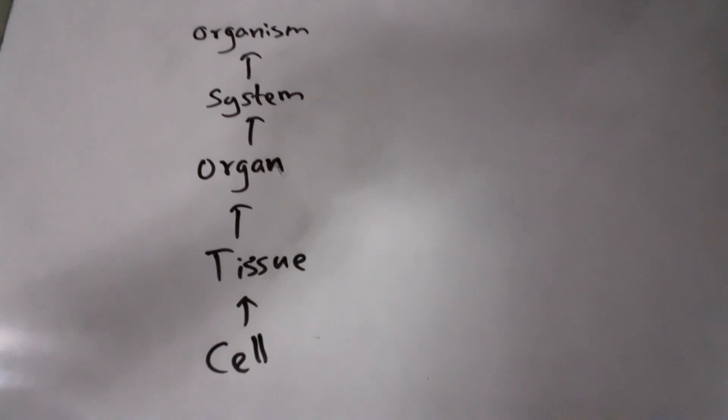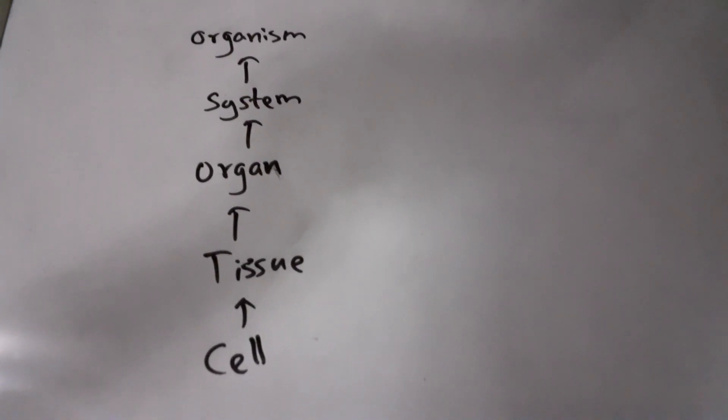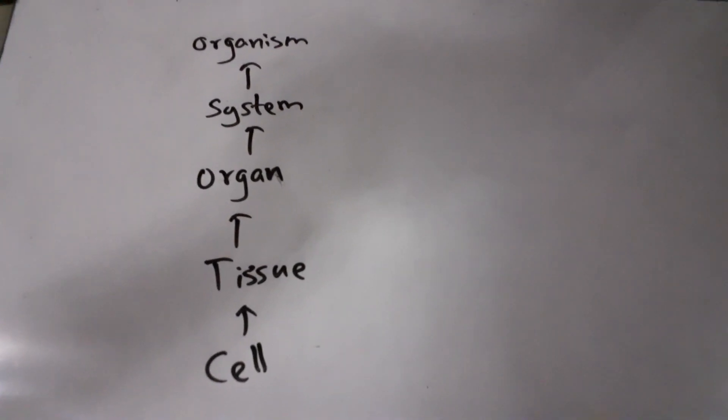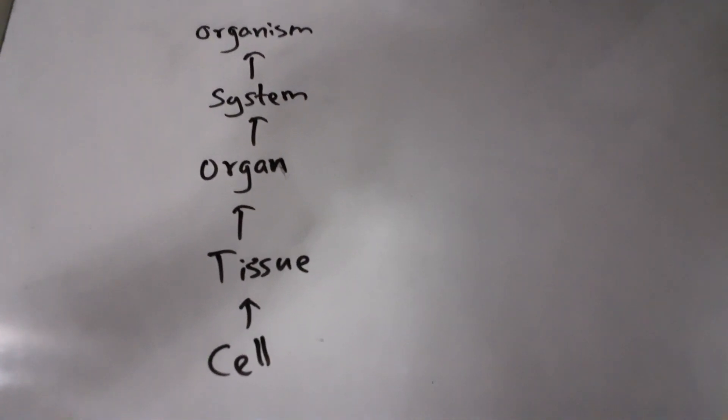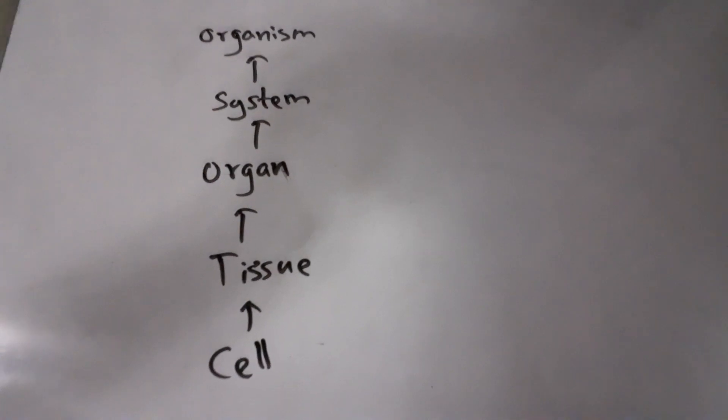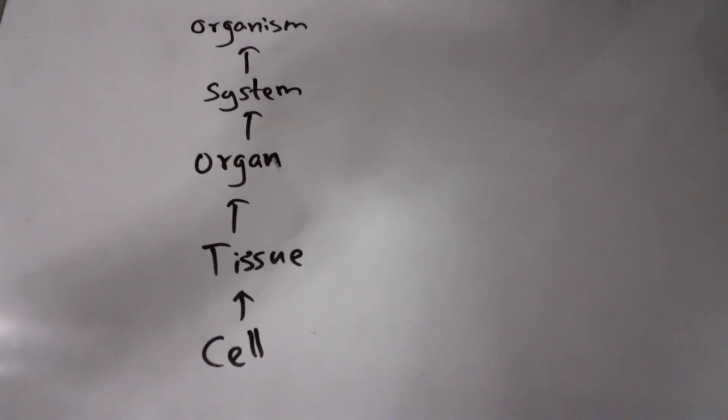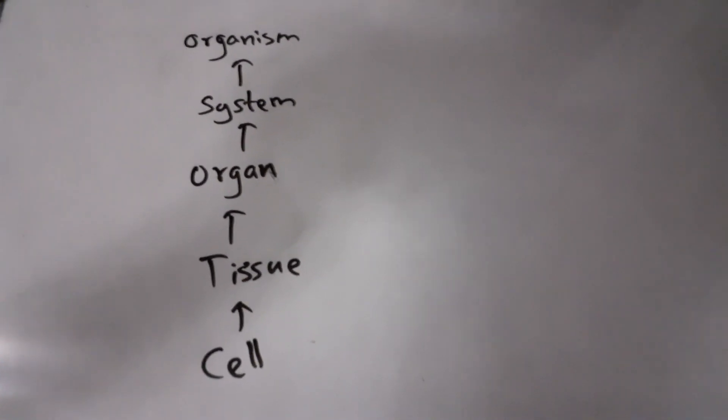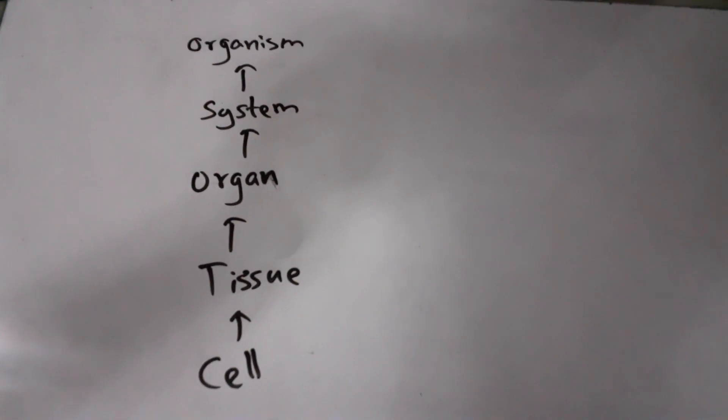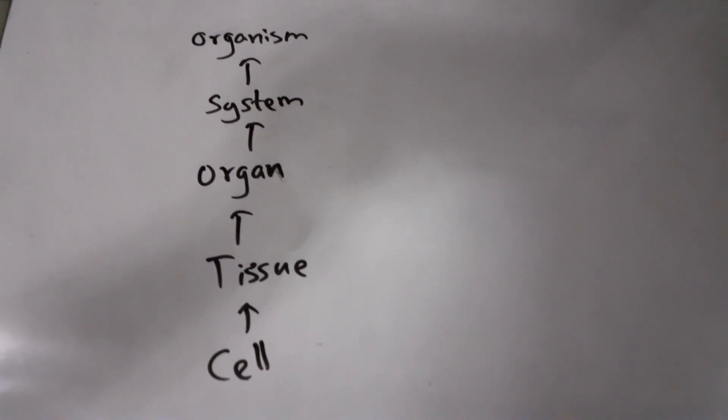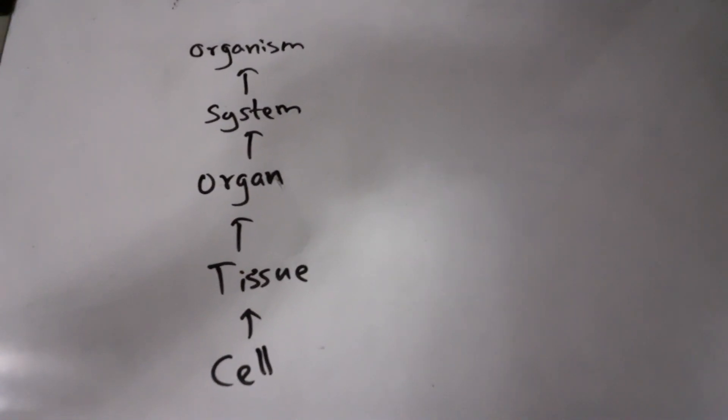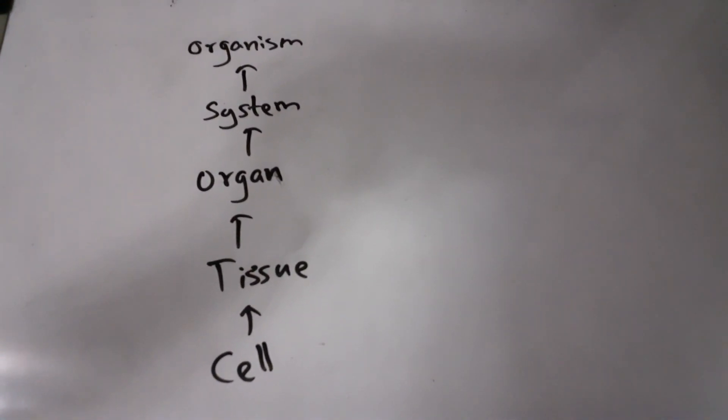If you consider the organization of the living body, it starts from cell, then collection of cells is called tissue, then collection of tissue is called organ, then collection of organs is known as system, and systems make the organisms. The smallest unit of this organization is the cell. Cell is the basic structural and functional unit of the organism.